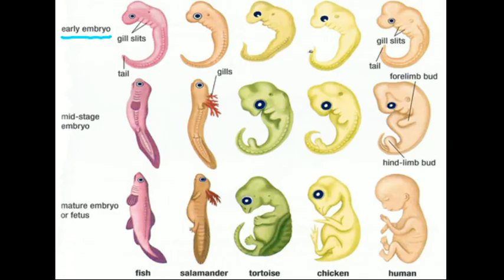Some homologies include gill slits and a tail. In some species, like the salamander and the fish, the gills and tail develop into useful parts. But in human embryos, they are considered vestigial parts, or parts of an organism that has lost all or most of its function in the course of evolution.